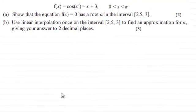Hi there. Now for this question we're given that f(x) equals cos(x²) minus x plus 3, where x is greater than 0 but less than π. For the first part we've got to show that the equation f(x) equals 0 has a root α in the interval [2.5, 3] for two marks.